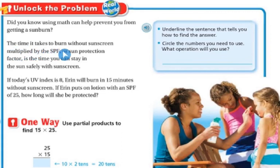Did you know using math can help prevent you from getting sunburned? The time it takes to burn without sunscreen multiplied by the SPF or sun protection factor is the same time you can stay in the sun safely without sunscreen. If today's UV index is 8, Erin will burn in 15 minutes without sunscreen. If Erin puts on lotion with SPF 25, how long will she be protected?